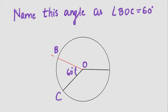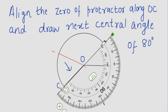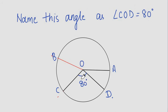After drawing this angle, align the zero of the protractor along OC to make the next central angle of 80 degrees. This is how we get the next central angle, angle COD, which is 80 degrees.